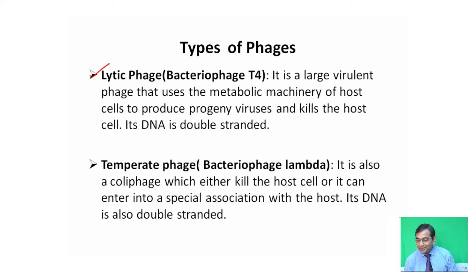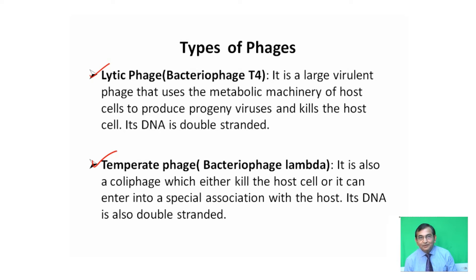Bacteriophage T4 uses the metabolic machinery of host cells to produce progeny viruses and kills the host cells. Its DNA is double-stranded. On the other hand, the temperate phage, that is bacteriophage lambda, is also a phage that infects E. coli, which either kills the host cell or can enter into a spatial association with the host. Its DNA is also double-stranded.